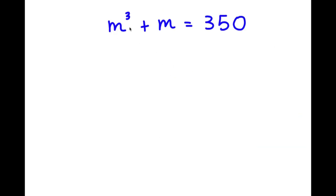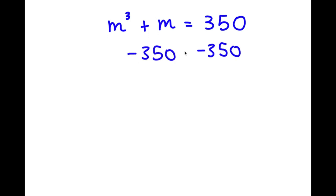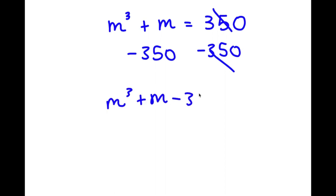In this problem, I have m to the power of 3 plus m is equal to 350. The first thing I'm going to do is subtract 350 on both sides, so these two cancel out and I have m³ plus m minus 350 equals 0.